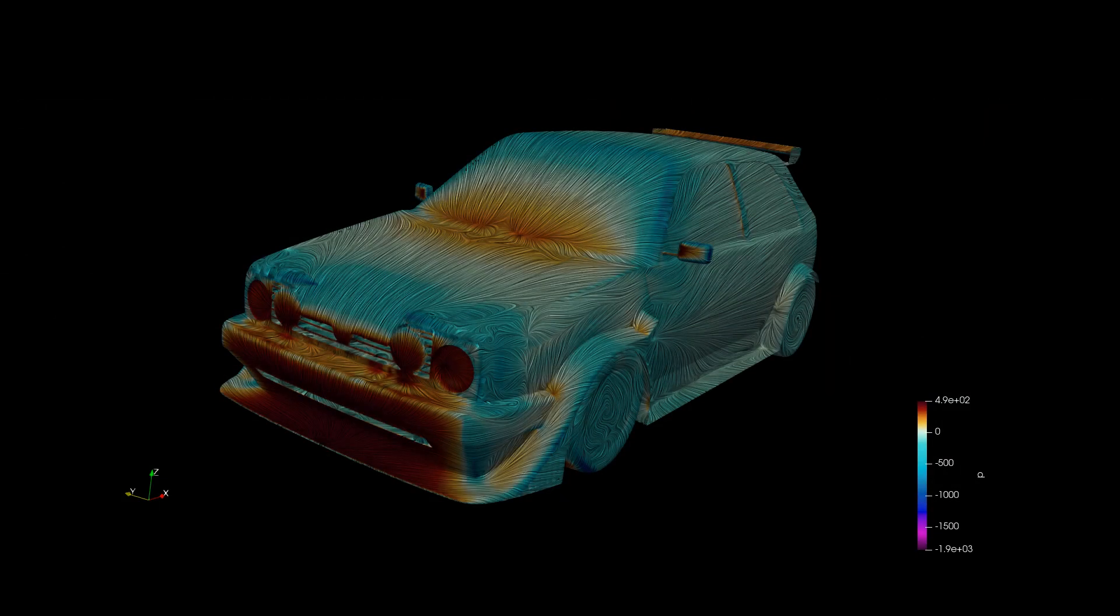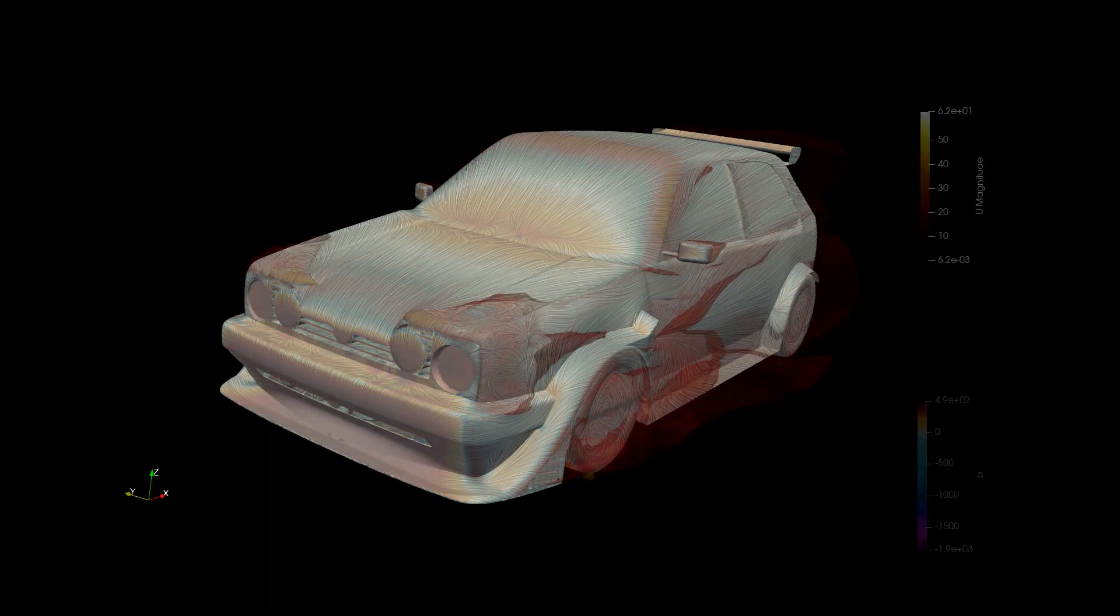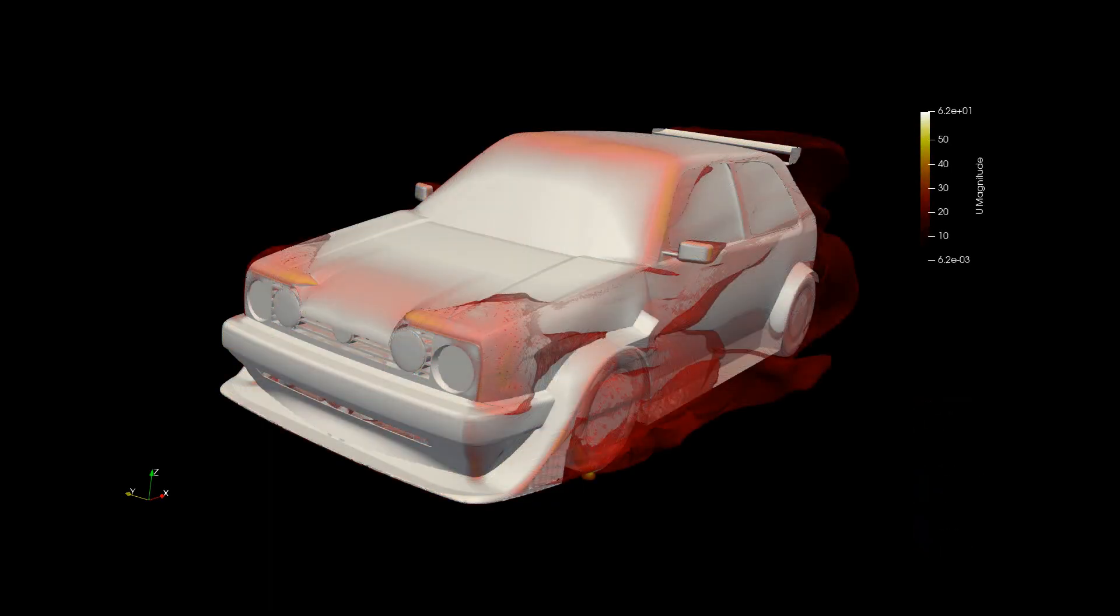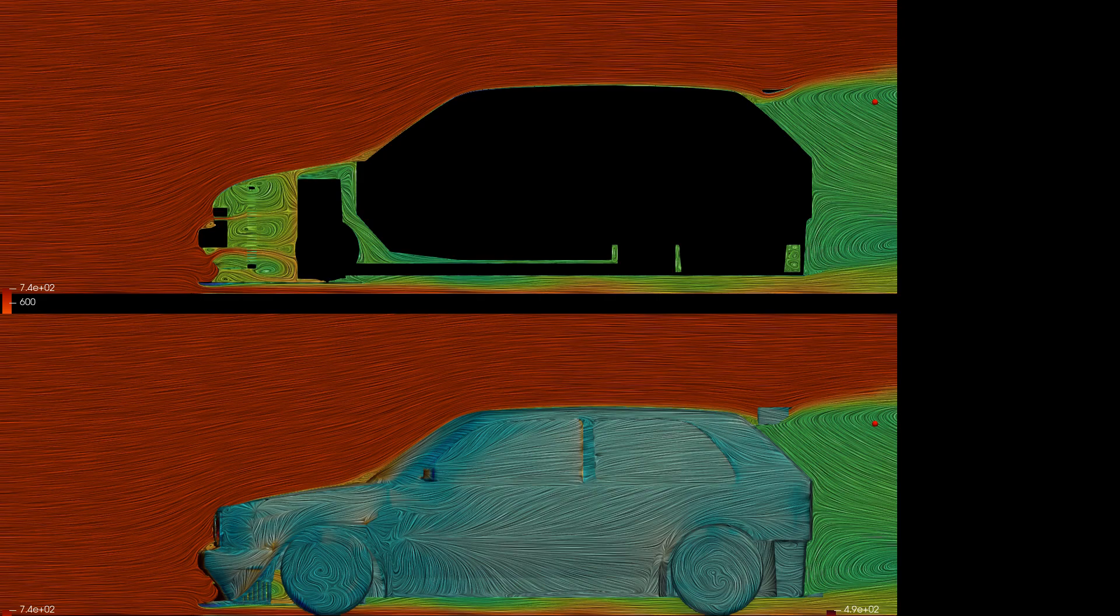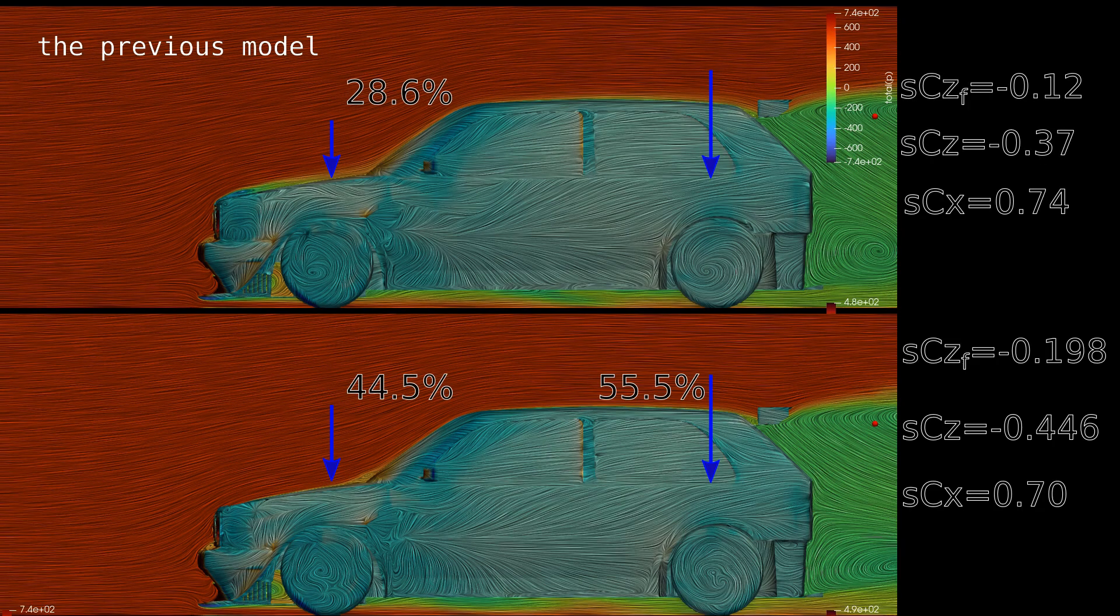The result is, it increases the total downforce by 20% and reduces drag by 5%, which is nice. However, I'm here for the front downforce. This was increased by 88% to an SCZ of negative 0.198. Front to rear pressure distribution is now 44.5, 55.5.